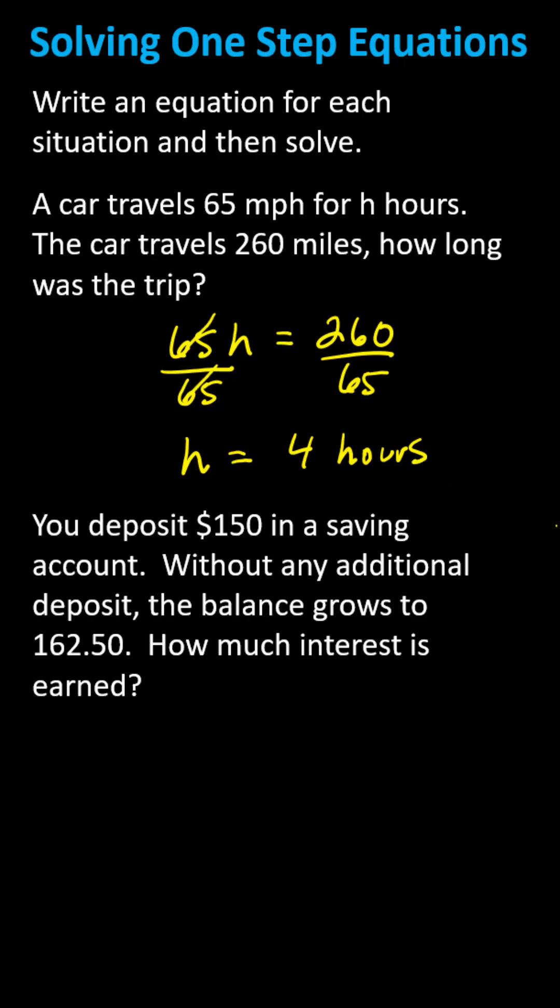The equation is going to be the starting deposit of $150 plus any interest earned, which we'll use the variable i to represent, which must equal the ending balance of $162.50.